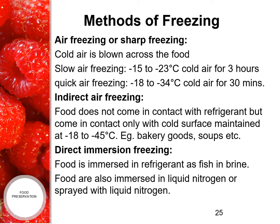The next method is indirect contact freezing. In this, food does not come in contact with the refrigerant but only with the cold surface, which is maintained at minus 18 to minus 45 degrees Celsius. Examples include bakery goods, soups, etc. The third method is direct immersion freezing, where food is immersed in refrigerant, such as fish in brine. Food is also immersed in liquid nitrogen or sprayed with liquid nitrogen.